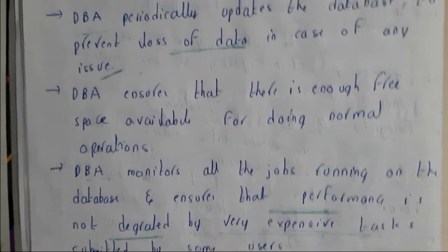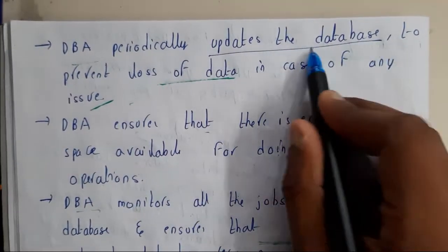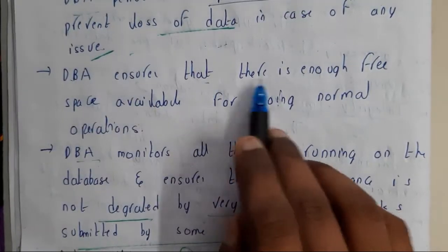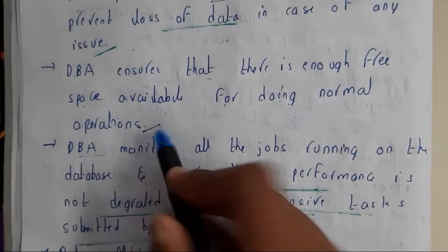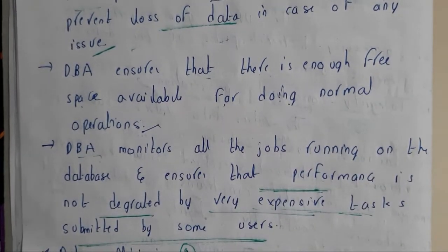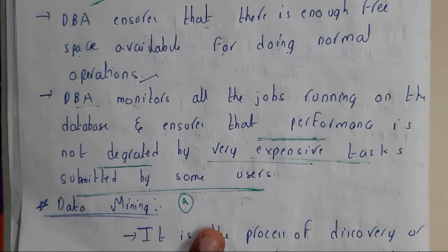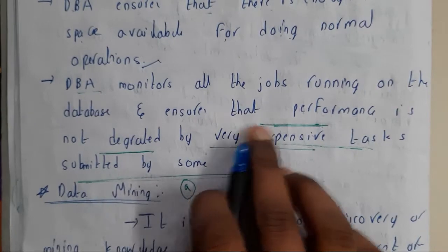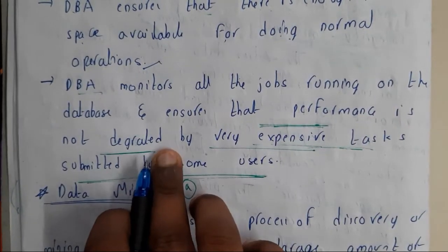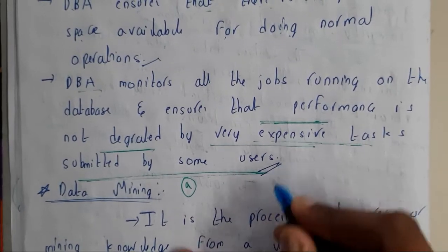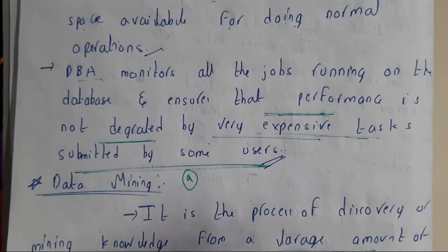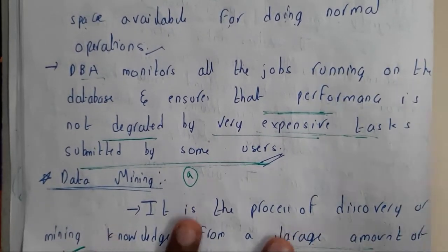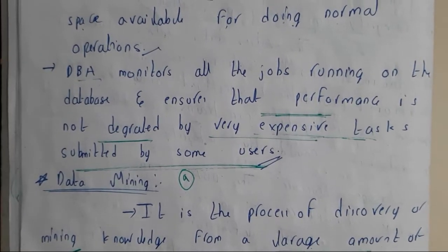The database administrator will also be periodically updating the database so that the chances of data loss are reduced. The DBA ensures that there is enough free space available for new operations. Similarly, the DBA monitors all the jobs running on the database and ensures that performance is not degraded by expensive tasks submitted by users — whatever tasks the users submit, the database should handle them properly.